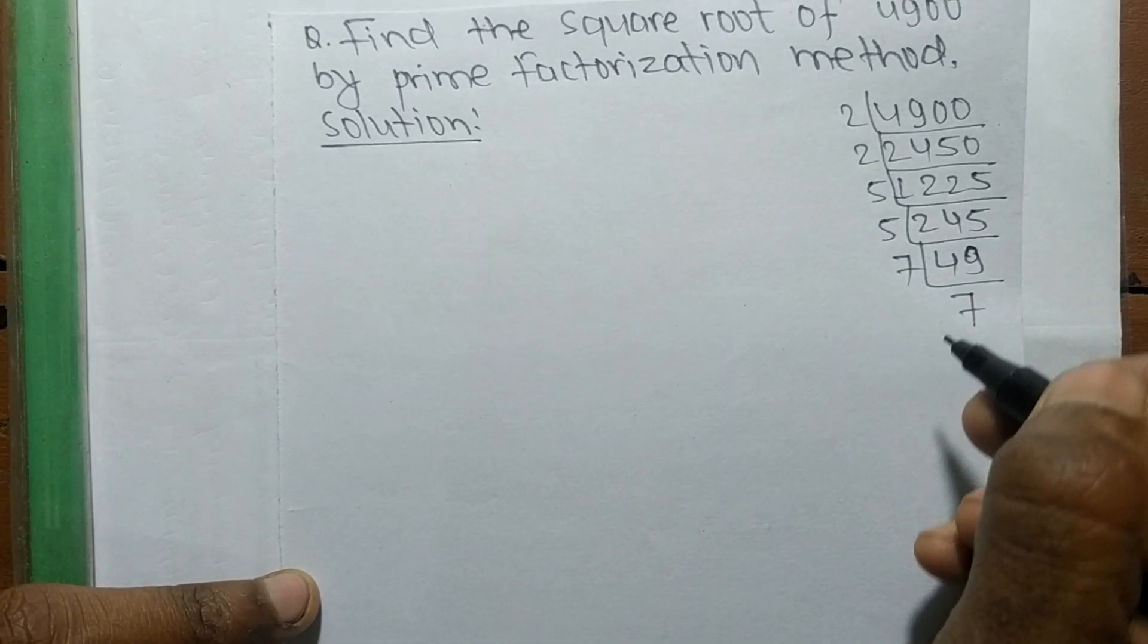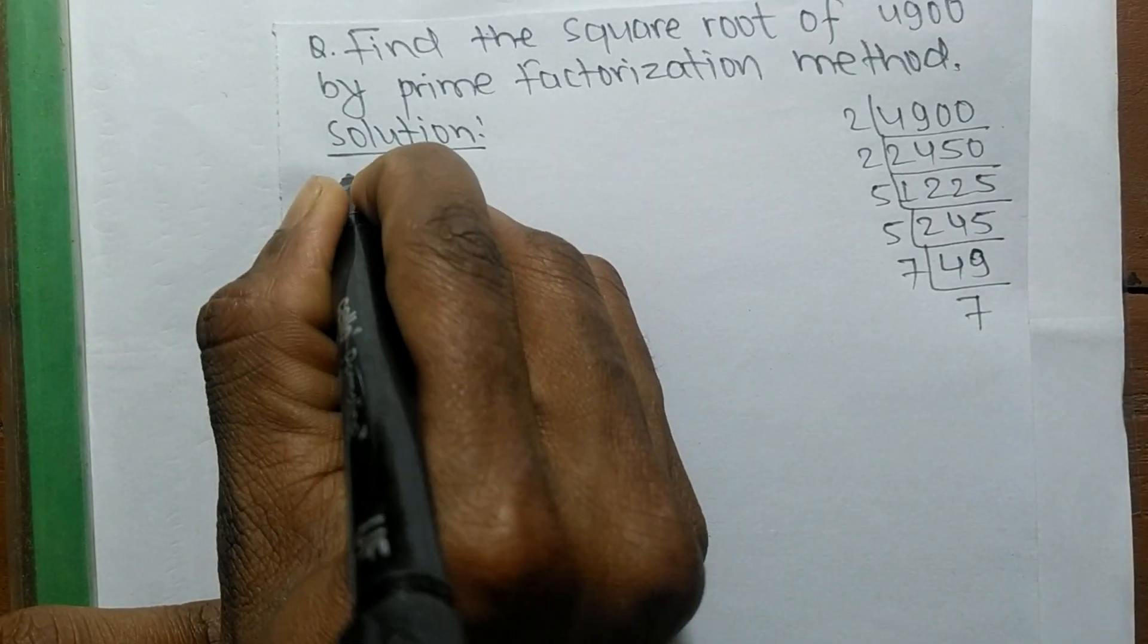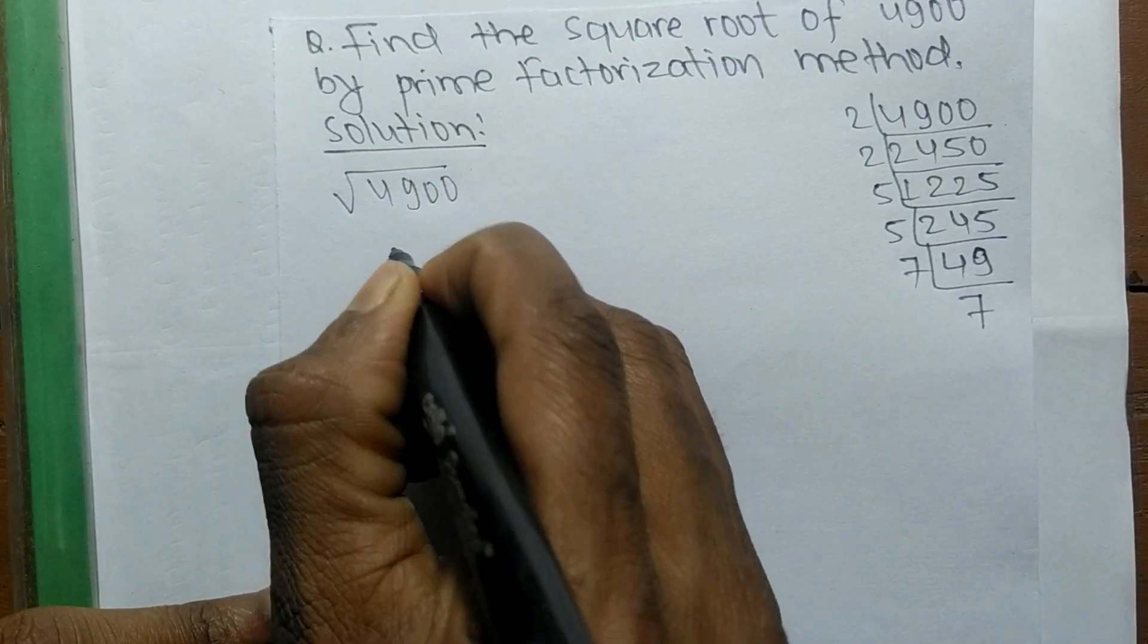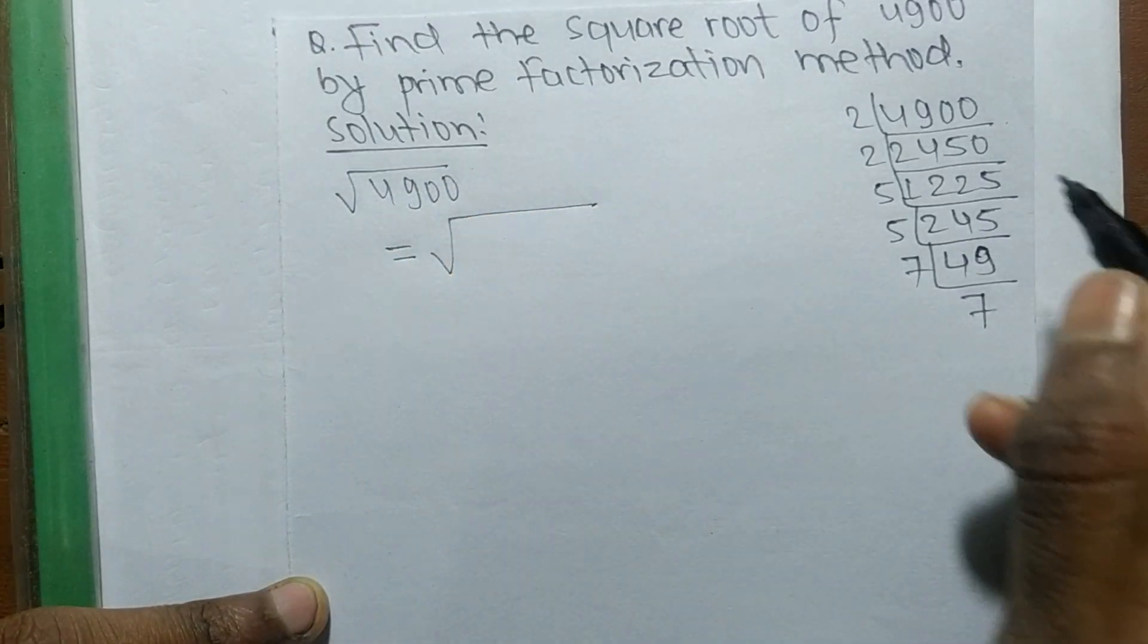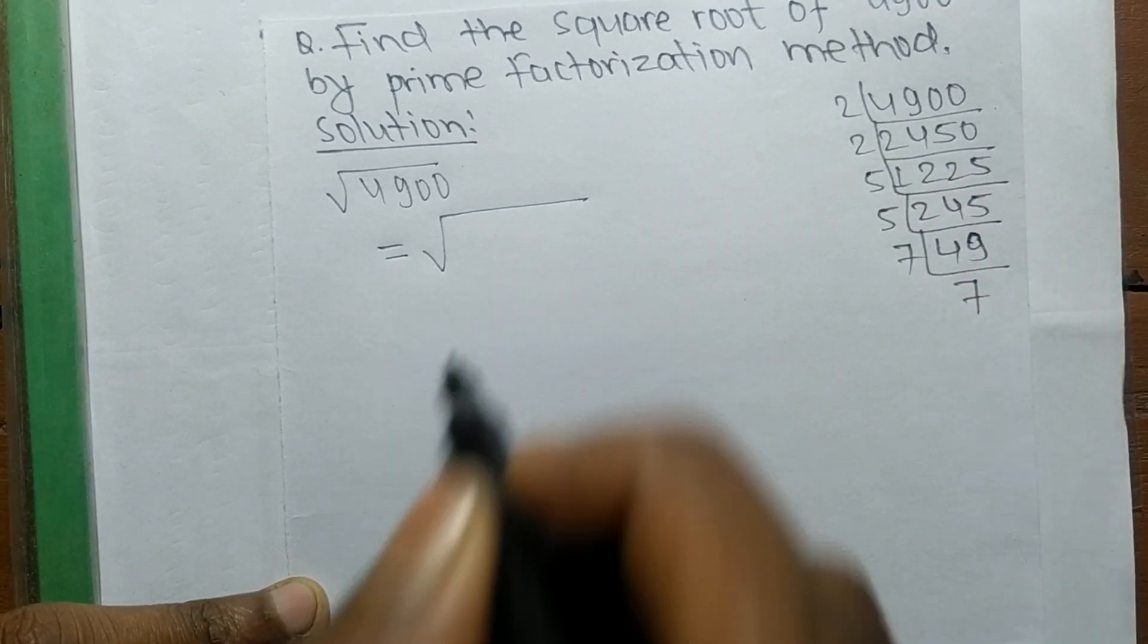We have found the prime factors of 4900, and now we find the square root of 4900. It is equal to the square root of the product of these prime factors.